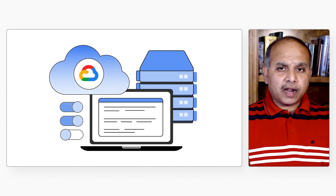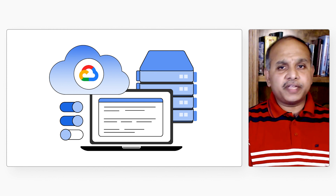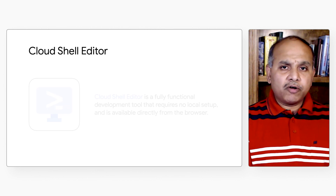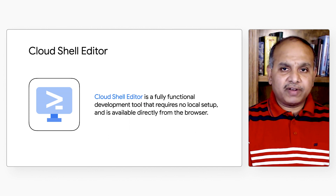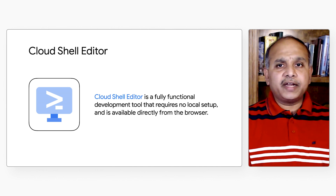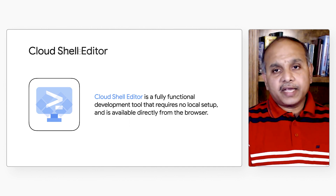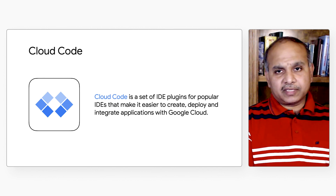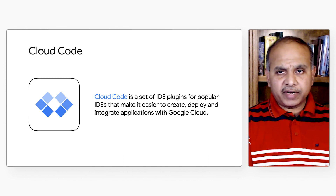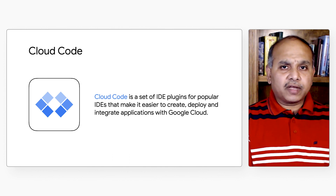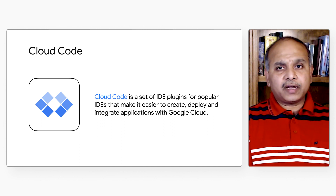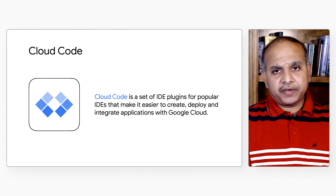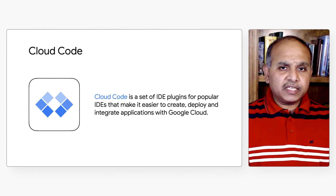Luckily, there are Google Cloud and open source tools that can help speed up the inner loop for container developers. First, there is Cloud Shell Editor, available at ide.cloud.google.com — an online development environment that makes it easy to write code directly from your web browser and deploy it to cloud. Next, there is Cloud Code, a set of IDE plugins that make it easier to create, deploy, and integrate applications with Google Cloud. It comes by default with Cloud Shell Editor, but can also be used with VS Code or IntelliJ. Cloud Code simplifies container development workflows for Kubernetes and Cloud Run, allowing you to build, deploy, and debug your application with just a few clicks. It also makes it easy to do step-by-step debugging.